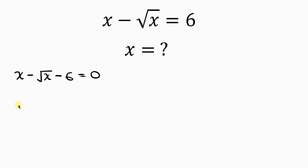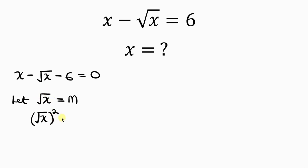Our next step is to apply substitution because of the square root of x. So let the square root of x be equal to m. Since the square root of x equals m, we need x — and to get x we take the square of both sides. The square cancels the square root, leaving x equal to m squared.